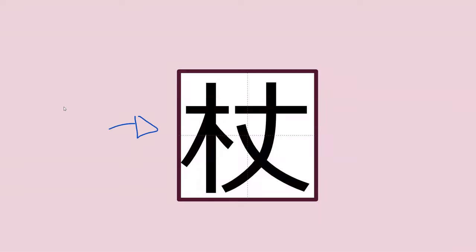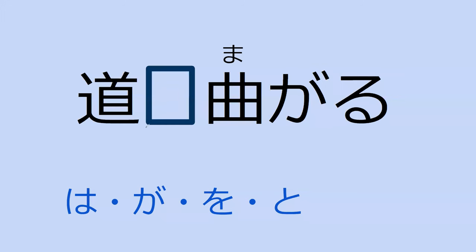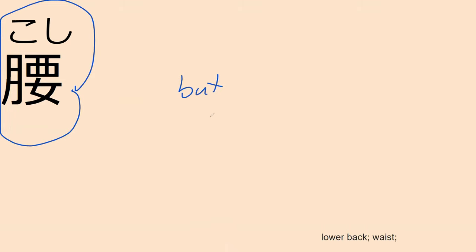Our next word is 曲がる, which means 'to bend' — or rather 'to be bent.' 曲がる. For example, you might use this with the word 道 (path). What do you think the particle would be? 道が曲がる. Yes — the path will bend. Perfect.